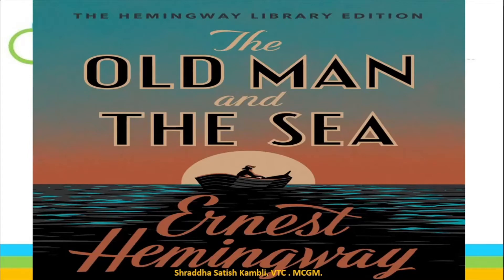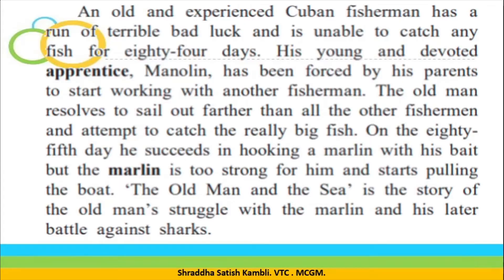Now let us do a quick look at the story once again, because most of the questions we will take now are based on the story. There was an old and experienced Cuban fisherman going through a terrible phase of bad luck — he was unable to catch any fish for 84 days. He had a young and devoted apprentice, meaning a trainee observing someone already in the profession. That apprentice's name was Manolin.